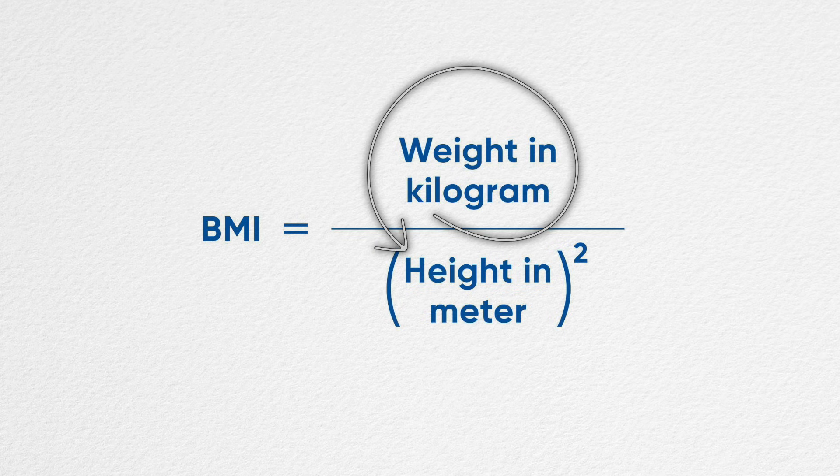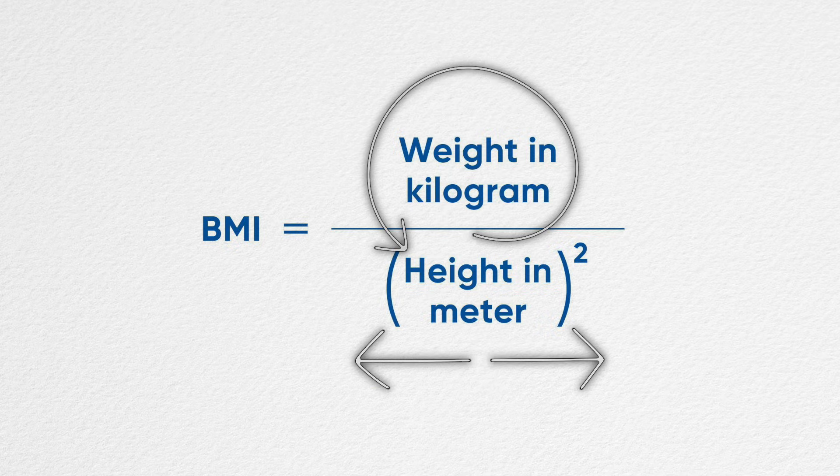Weight in kilograms divided by height in meters squared. For example, a 70 kg man who is 170 centimeters tall — that is 1.7 meters. So 1.7 x 1.7 in square, and weight is 70. So 70 divided by 1.7 x 1.7 will give about 25. That is BMI.